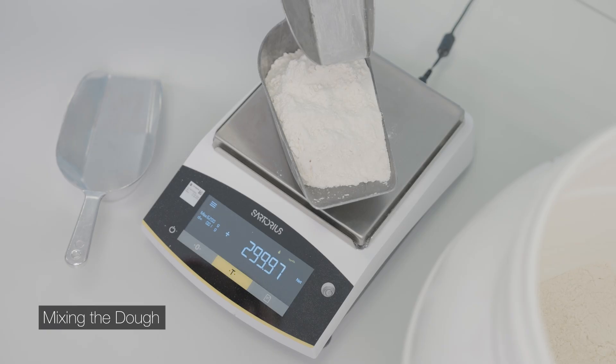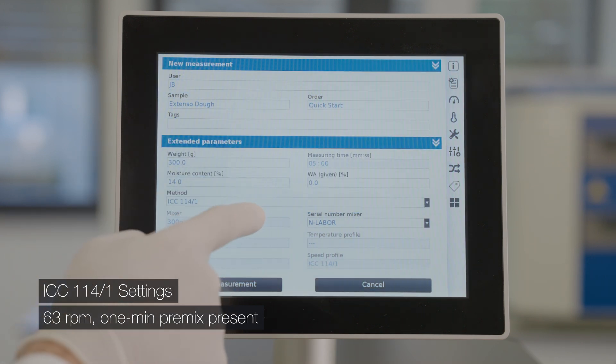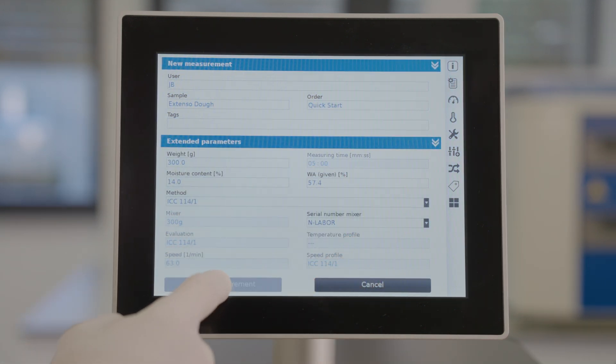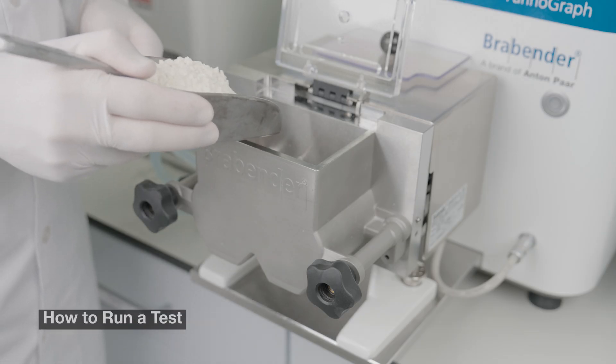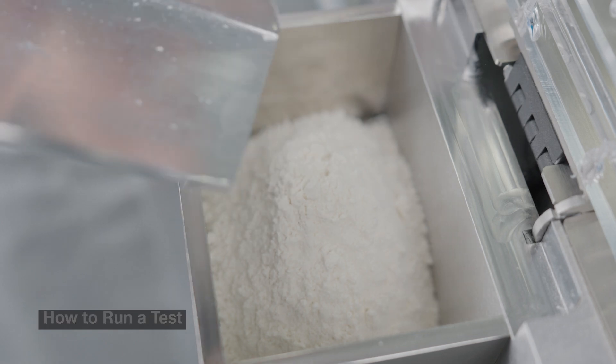Weigh 300 grams of flour. Select the ICC standard 114 over 1 and select water amount to achieve a consistency of 500 farinograph units. Start the measurement, add the flour into the farinograph mixer, and close the lid.